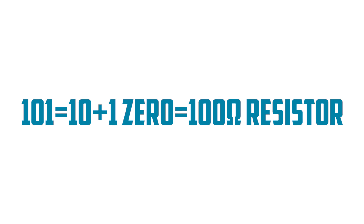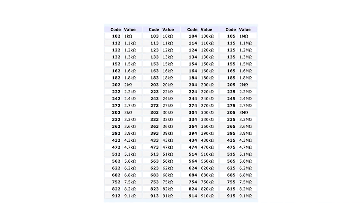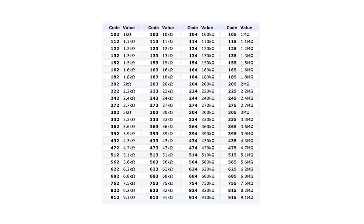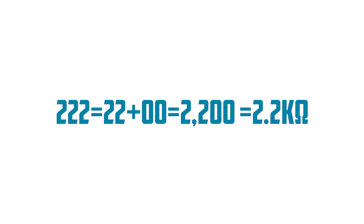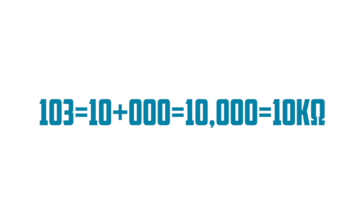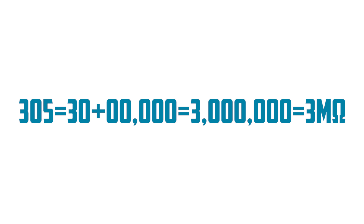A resistor labeled 101 equals 10 plus one zero and is a 100-ohm resistor. Here is a chart with more three-digit codes with their values. The last digit tells you how many zeros to add. 222 equals 22 plus two zeros, which equals 2,200, which is 2.2 kilo-ohms. 103 equals 10 plus three zeros, which is 10,000, which is 10 kilo-ohms. 305 is 30 plus five zeros, which is 3 mega-ohms.